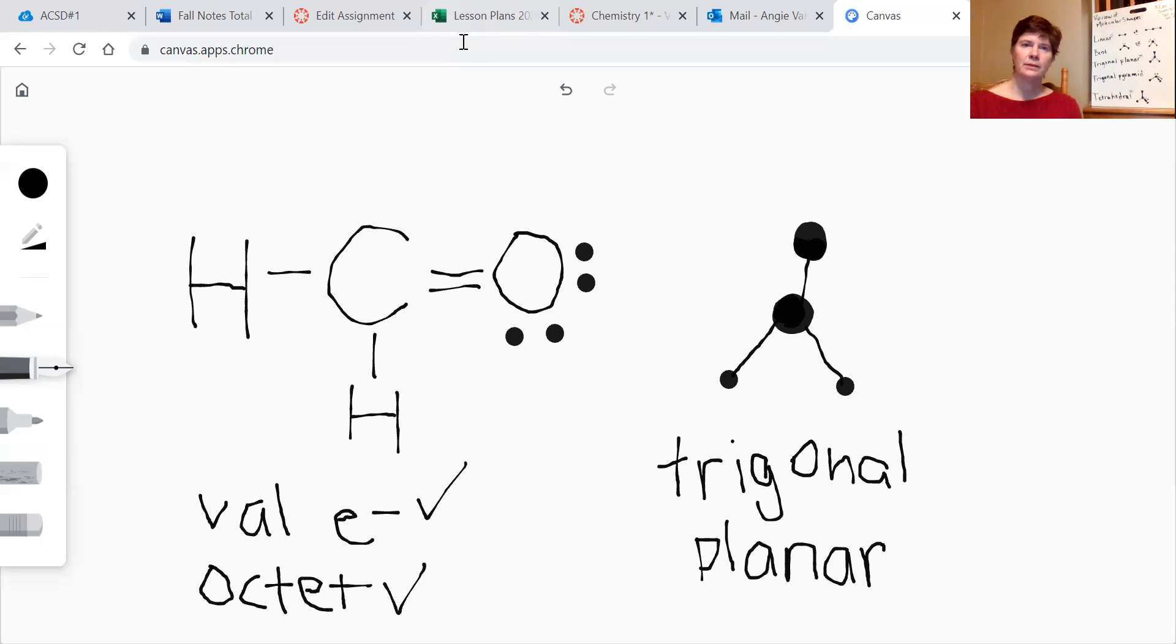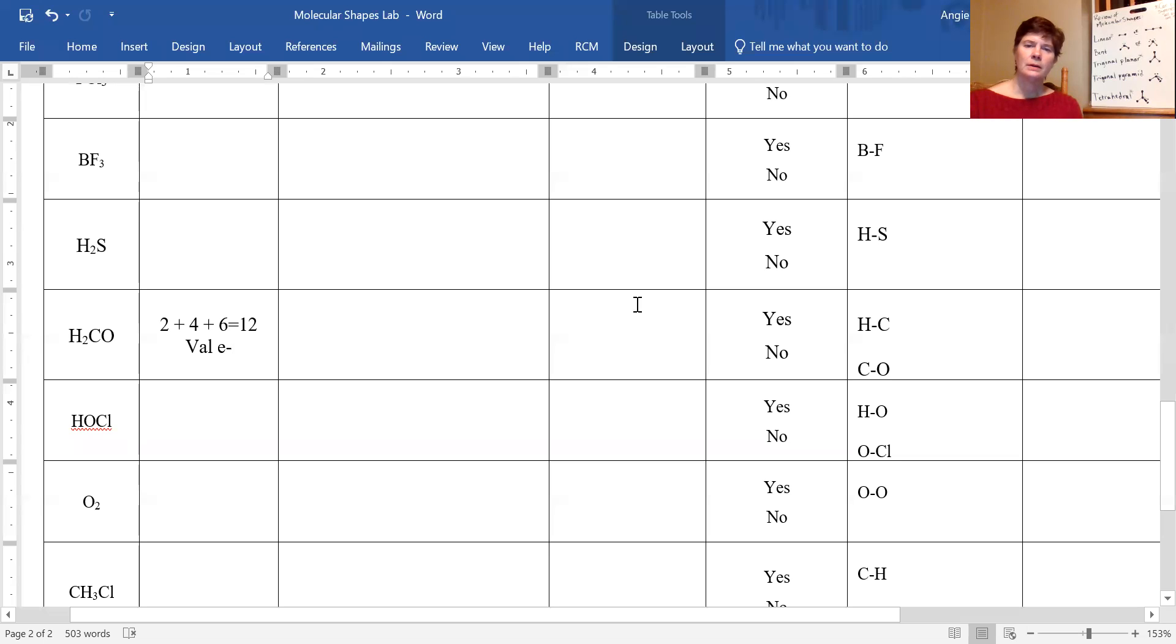Let's go back to our other screen. And for our symmetry, because it has different atoms on the outside, it is not symmetrical. Some of these will be symmetrical, some won't. But remember that if there are lone pairs on the central atom, they will not be symmetrical. If there are no lone pairs on the central atom, check to see: are all the outer atoms the same? And if they are, then yes, this is symmetrical. But for H2CO, the answer is no.